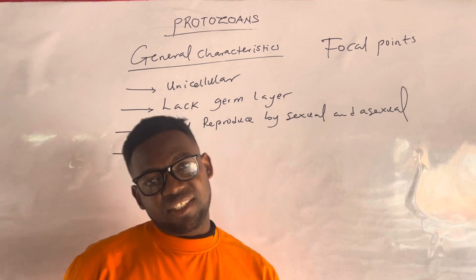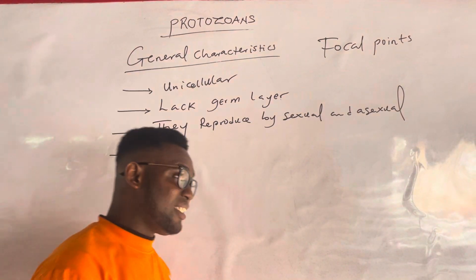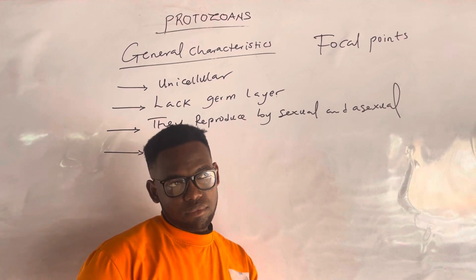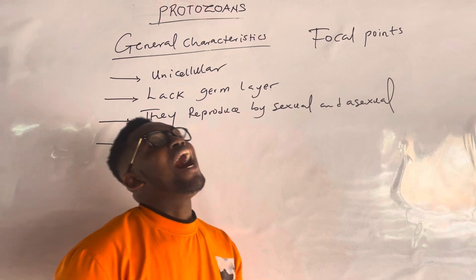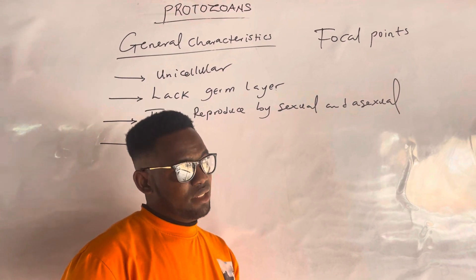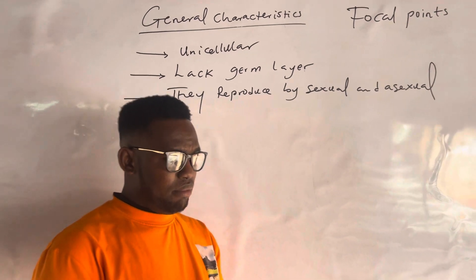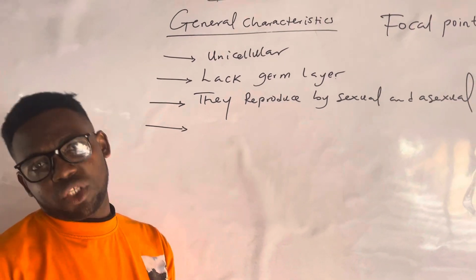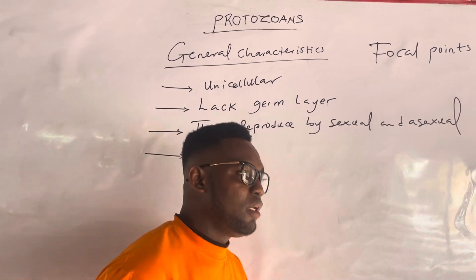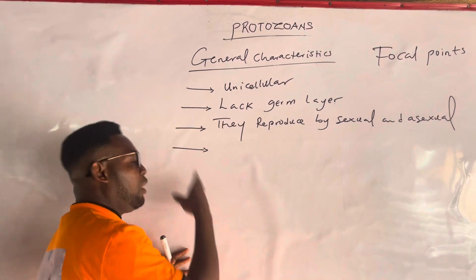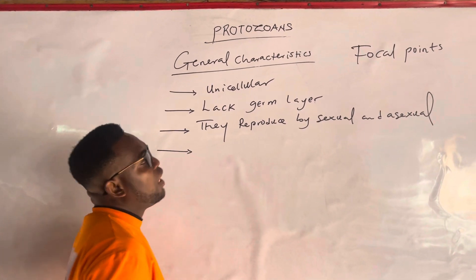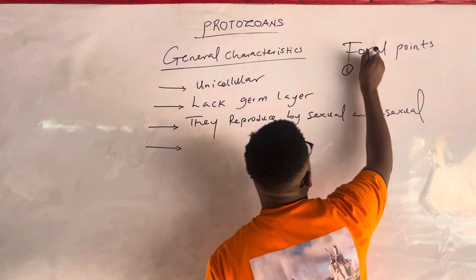Ask yourself a question: do I know any organism under this kingdom? If yes, next question you ask yourself: how does this organism reproduce? How does that organism feed? What are the physical attributes of such organisms? That will help you understand these topics without cramming. So one of the focal points is reproduction.